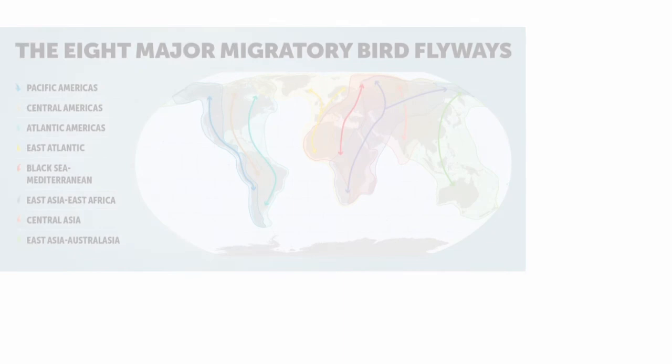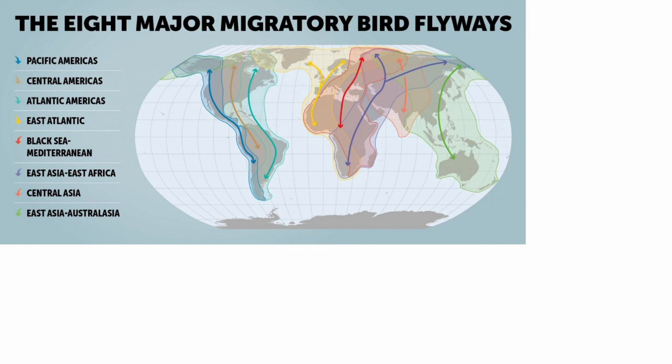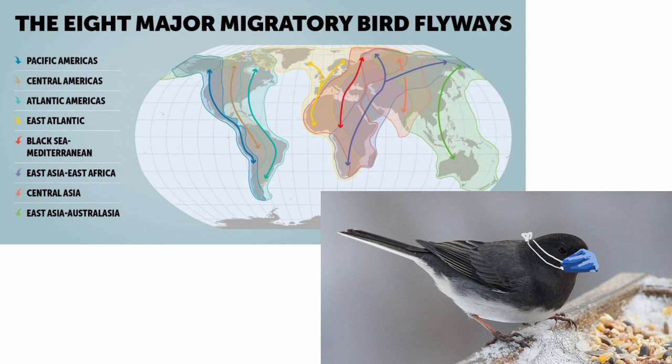In biology, graph theory can illustrate and help organize complex migration patterns, with vertices as geographic locations or population centers, and edges as the species movement or paths of migration. For example, we can use graphs to model migration patterns, as seen on the screen, which helps scientists observe how certain species evolve, as done with juncos at UCSD.